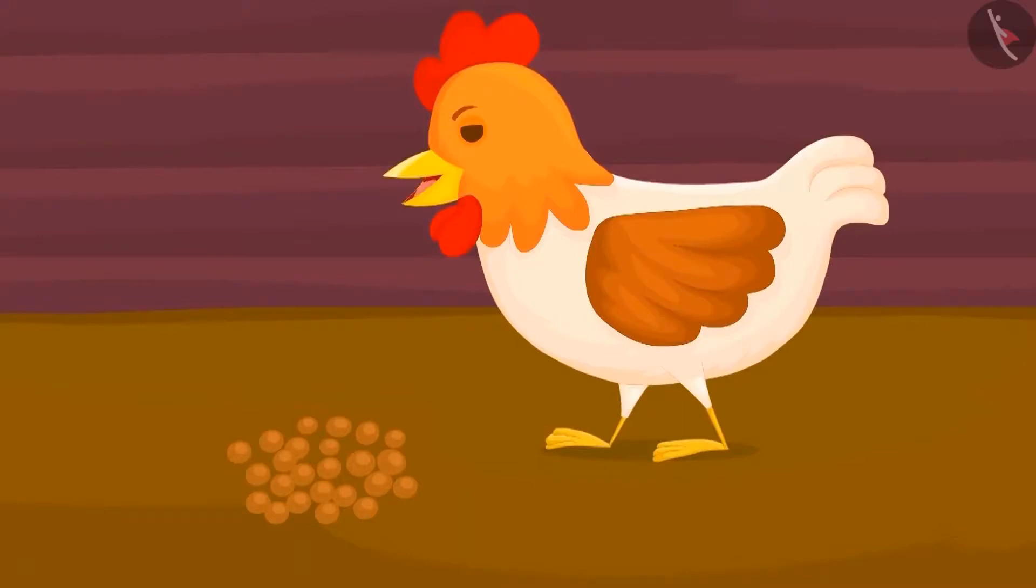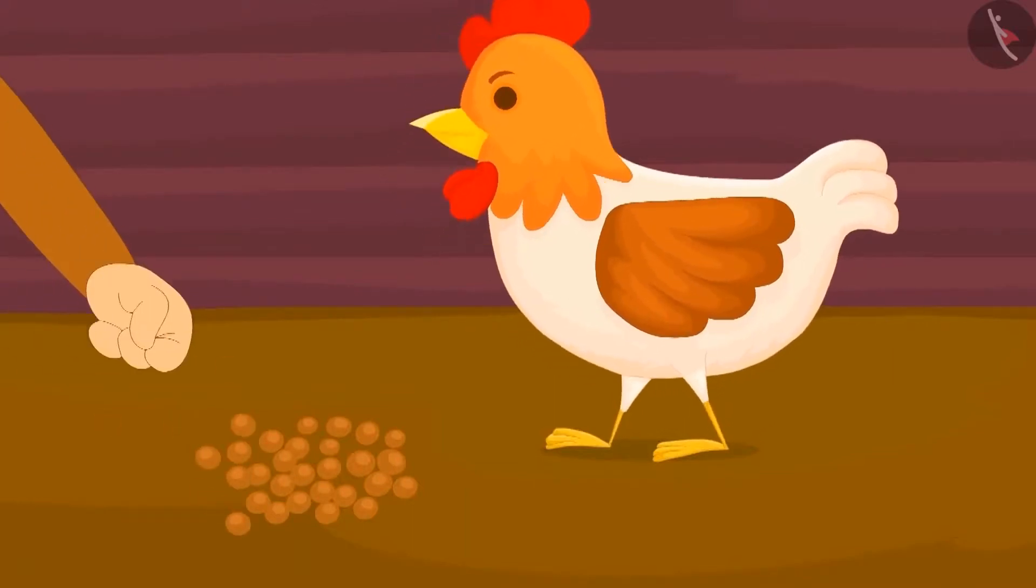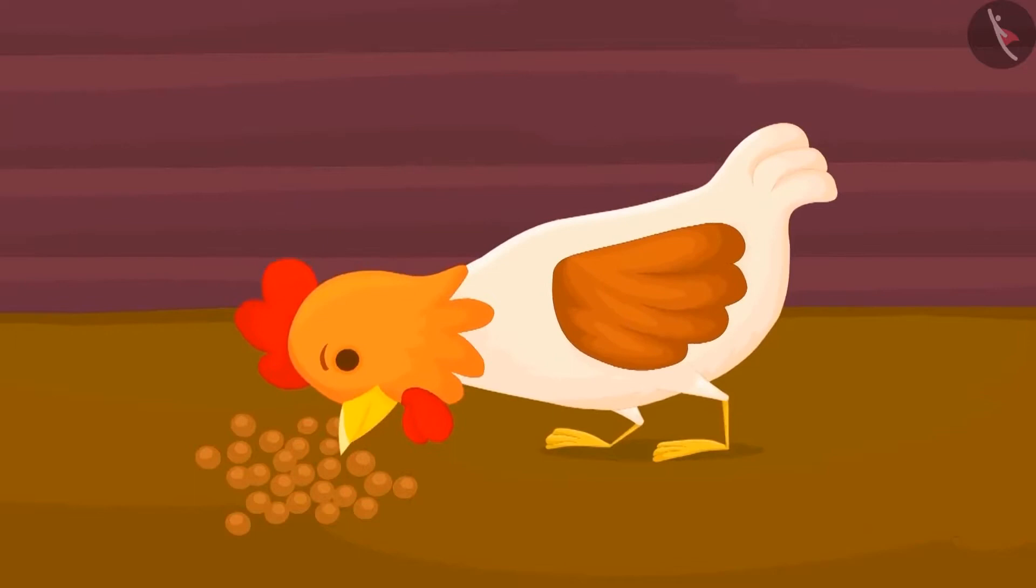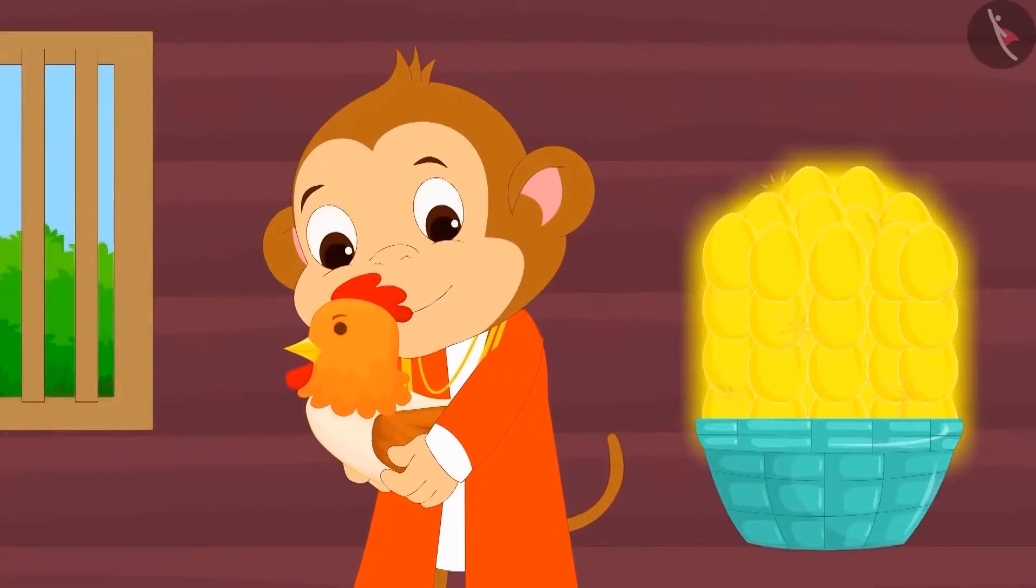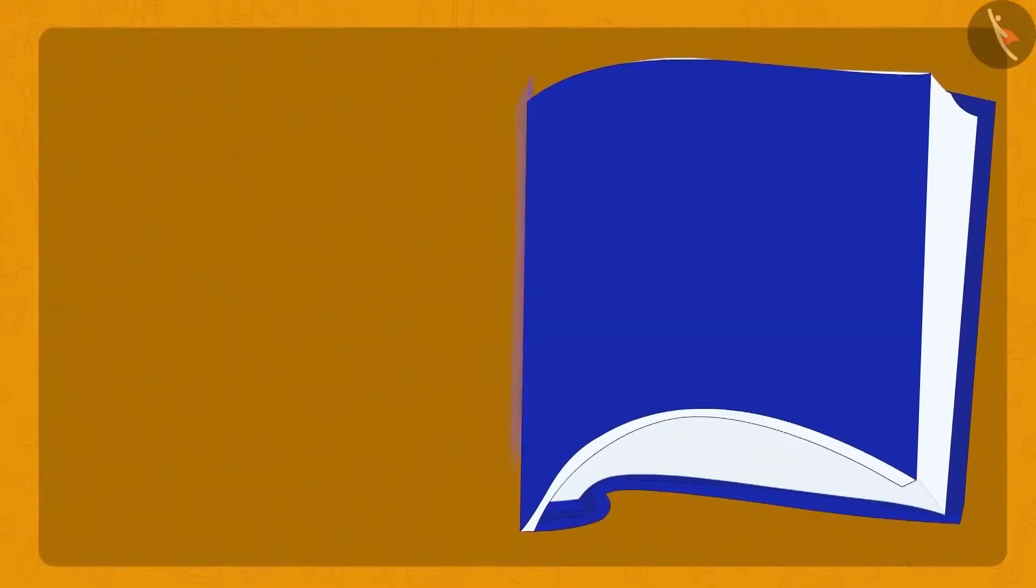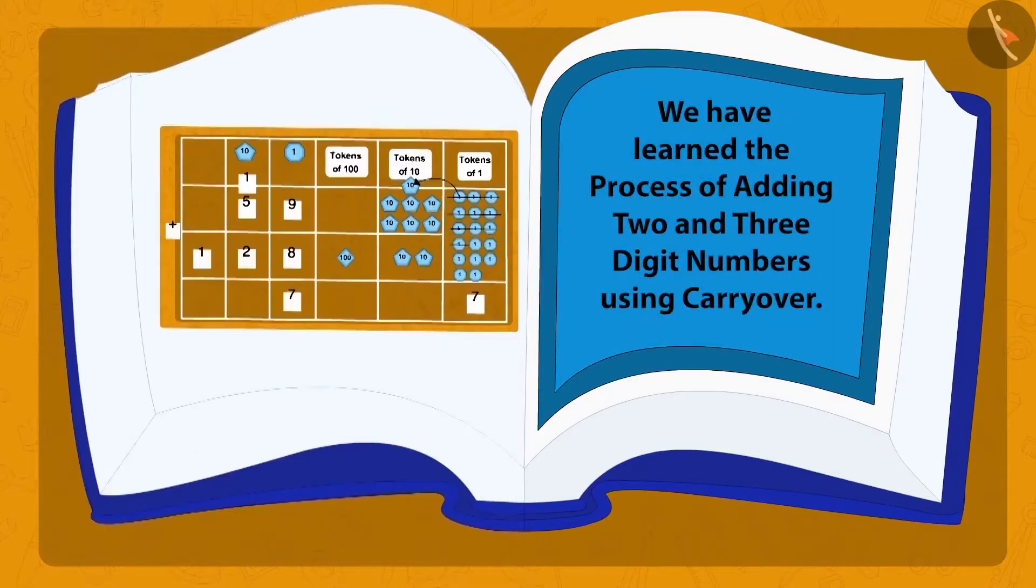Baban now started feeding his hen with fodder. And the hen kept giving him more golden eggs. After all, Baban became the richest man in the village. Children, in this lesson, we have learned the method of adding 2 and 3 digit numbers using the carry over method. In the next lesson, we will see some more interesting examples of this.